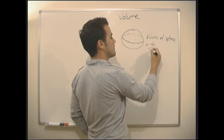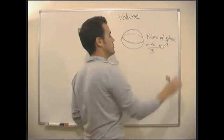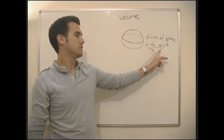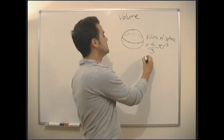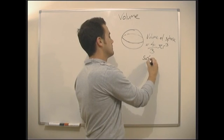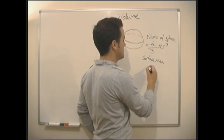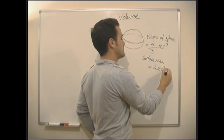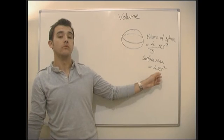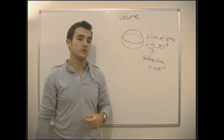4 thirds times pi times the radius cubed. The surface area of a sphere is just 4 pi r squared. Just 4 times pi r squared will be the surface area of a sphere.